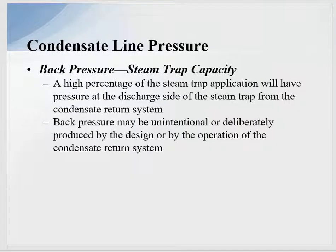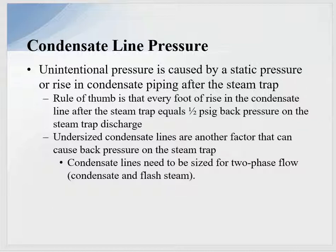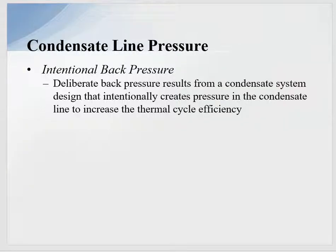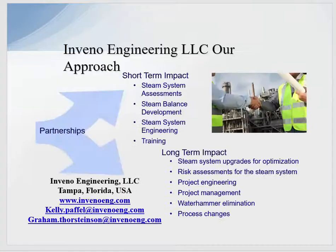Remember, there can be back pressure on the condensate system, and a high percentage of steam trap applications will have pressure on the discharge side. That pressure may be unintentional or deliberately produced by the system design. Unintentional back pressure includes elevating condensate overhead into the pipe rack — for every foot of rise, that's a half a PSI. Intentional back pressure is by design, and many systems run under pressure. Know the condensate pressure so you get the correct differential. That concludes the discussion on process applications.